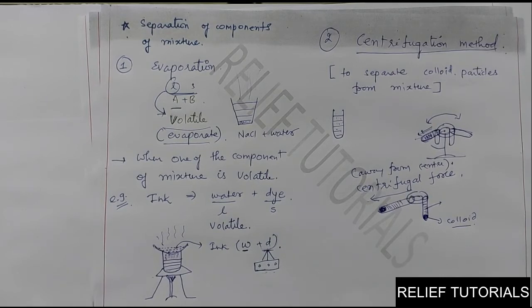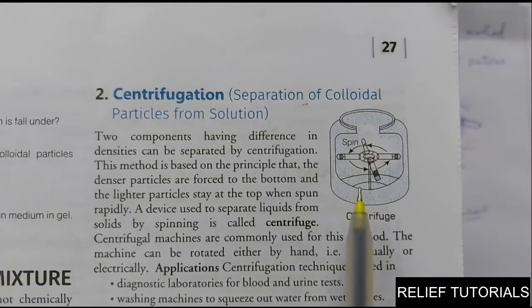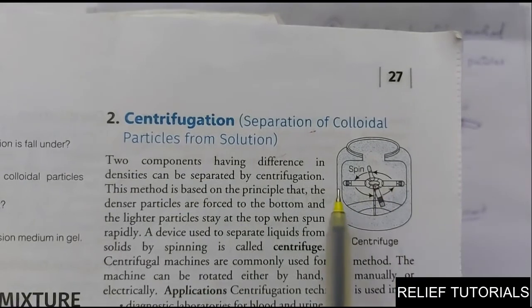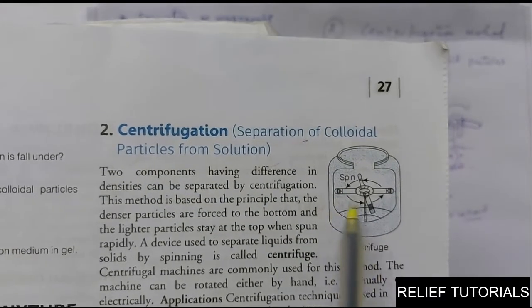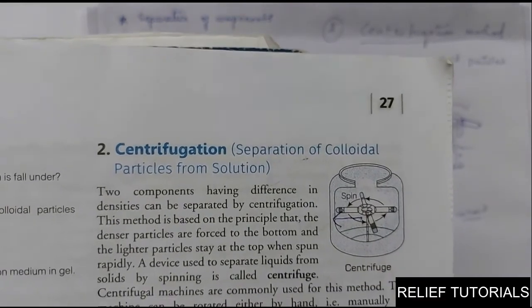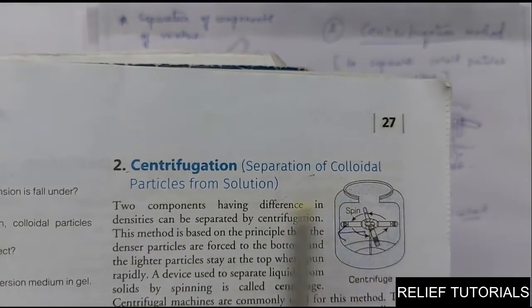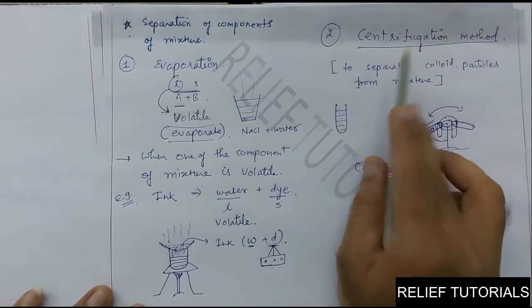Here is a diagram of a churning or spinning machine. Four test tubes are revolving here, and the colloid particles present are forced towards the bottom, away from the center of revolution. That is why it is called the centrifugation process — separation of colloidal particles from the solution. Colloid particles cannot be separated by filtration but they can be separated by the centrifugation method.